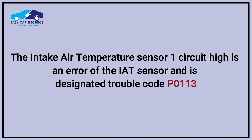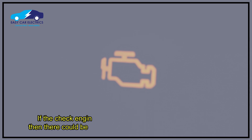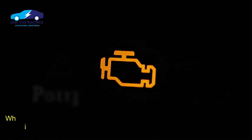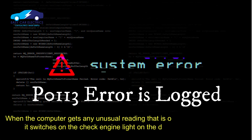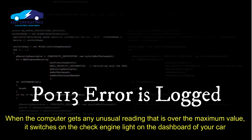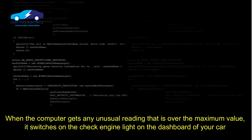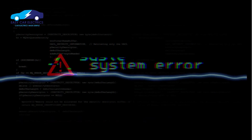The ECU uses the temperature data to optimize the combustion in the combustion chamber so that no unburnt fuel is left. The Intake Air Temperature Sensor 1 Circuit High is an error of the Intake Air Temperature Sensor, designated trouble code P0113. If the check engine light turns on and shows this code, there could be a problem with the Intake Air Temperature Sensor or the circuit. When the computer gets any unusual reading that is over the maximum value, it switches on the check engine light and logs the P0113 error code.